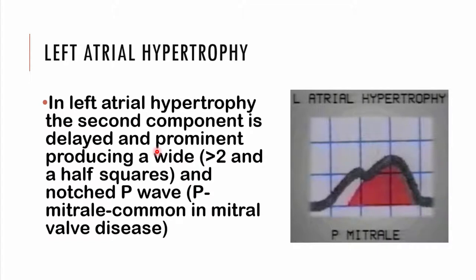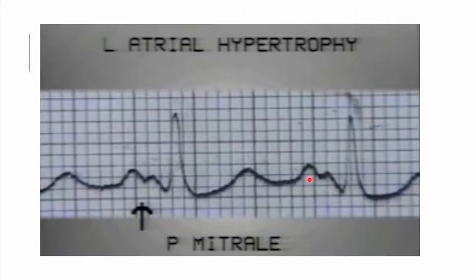Moving on to left atrial hypertrophy — the second component of the P wave is due to the left atrium. Because a greater impulse is needed to depolarize this hypertrophied part, you get a delayed and prolonged P wave, so the P wave becomes widened. It is greater than two and a half squares and appears notched — almost like an M shape. This is referred to as P mitrale because it is common in mitral disease.